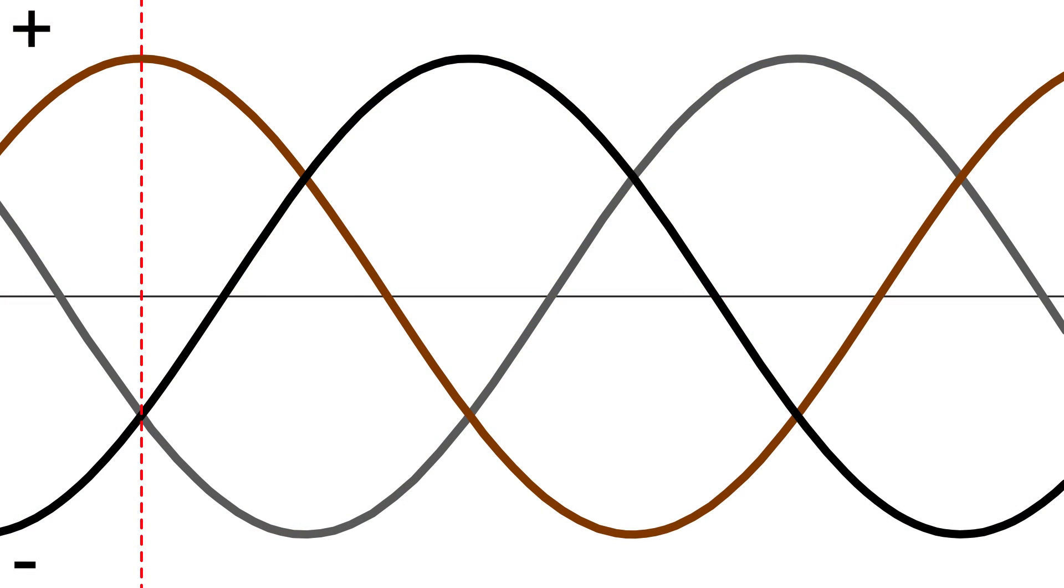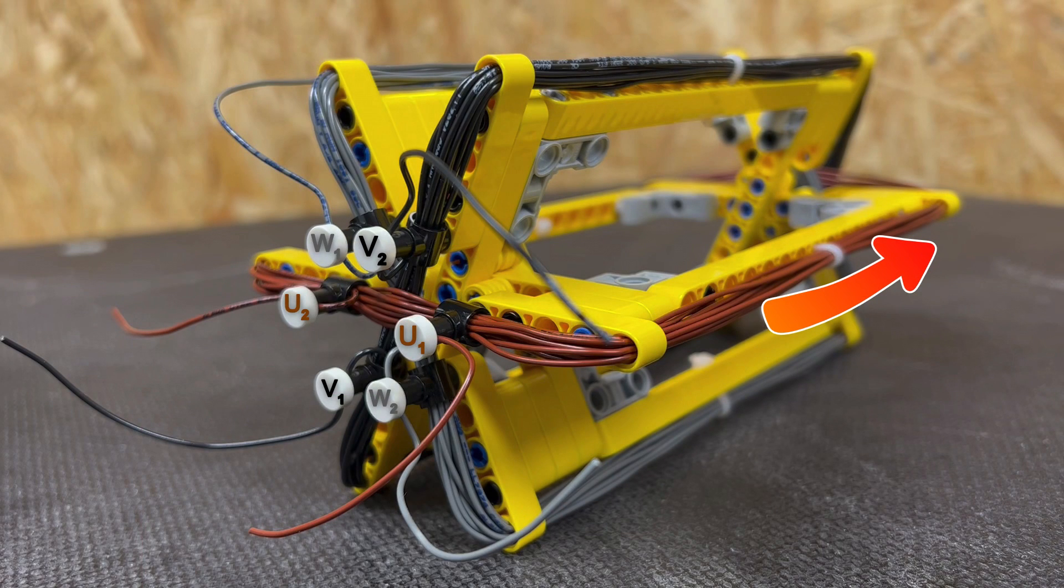The current in line two is halfway from its peak in the negative part of the cycle and so is going the opposite way into V2 and around this way. And line three is behaving exactly the same way.